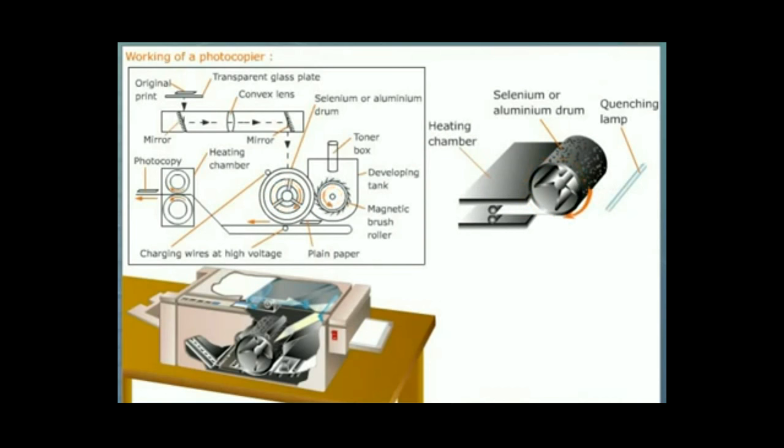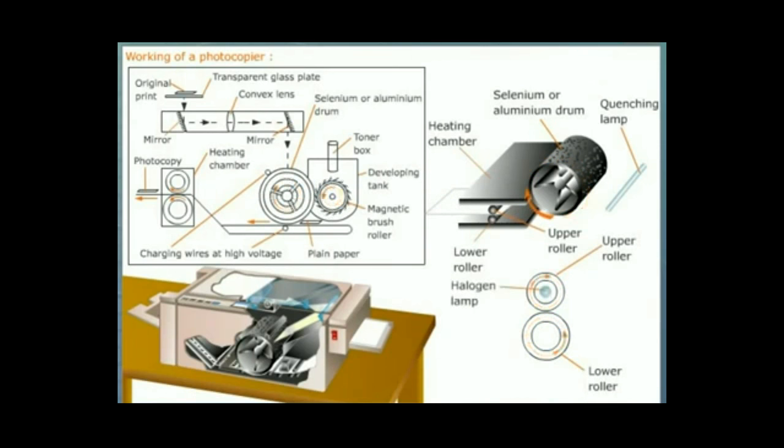The heating chamber consists of two rollers, namely upper and lower rollers. The halogen lamp is mounted on the axis of the upper roller. This lamp heats the roller and particles of toner melt into the fibers of the paper. The lower roller presses the melted toner into paper fibers, and thus we get a photocopy of the document.